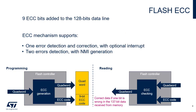Data in flash memory are 137 bits wide. 9 bits are added per each quad word of 128 bits. The ECC mechanism supports one error detection and correction, and two error detection when one error is detected and corrected. The ECC flag, ECC Correction, is set in the flash ECC register. An interrupt can be generated. When two errors are detected, the ECCD flag, ECC Detection, is set in the flash ECC register. In this case, an NMI is generated. The address and bank number at which the error has been detected are captured in status registers for further investigation.